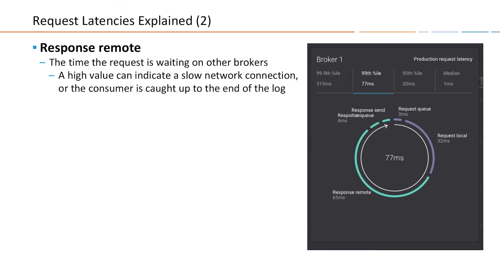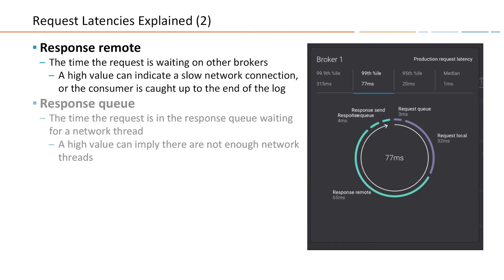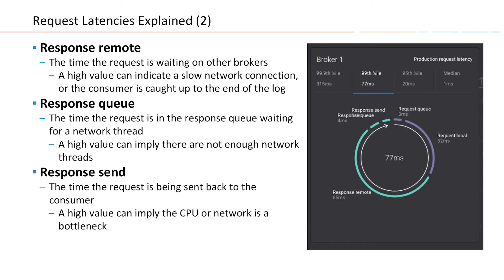After we have a response to send, it goes onto the response queue. The time spent there is the time we are waiting for a network thread to become available to send the response over the network. If this value is high, it may mean you need to add more network threads. The last chunk of time is spent sending the response back to the client — not time on the network, but time spent placing the request by a thread on the network stack of the operating system. A high value there usually indicates the operating system is completely out of CPU.